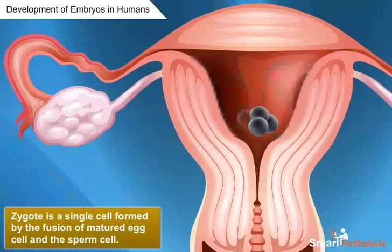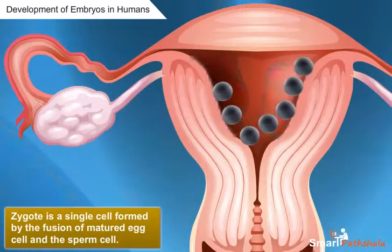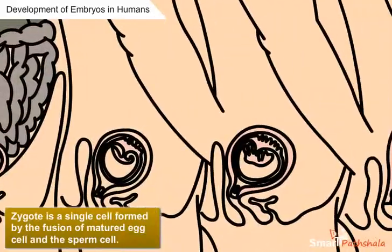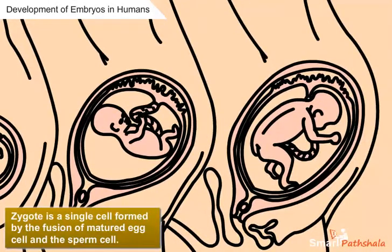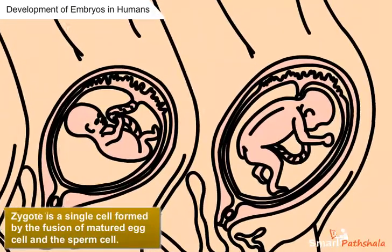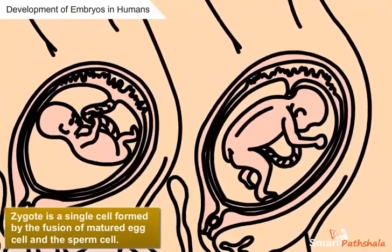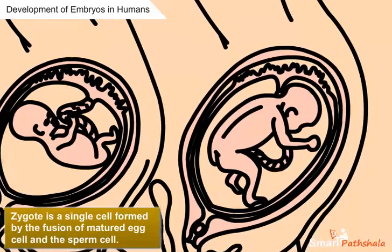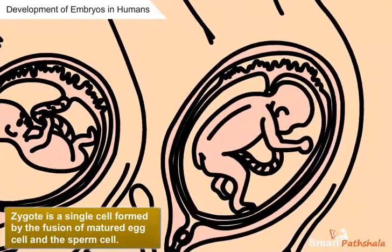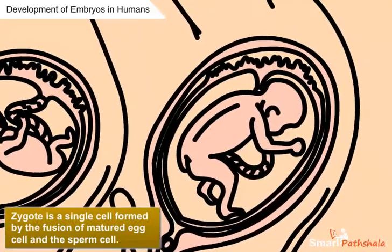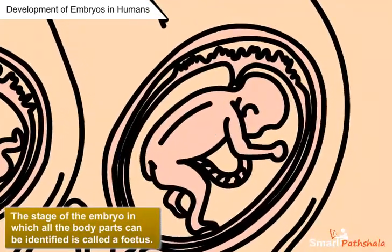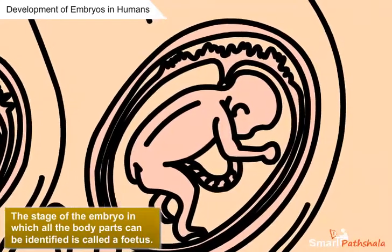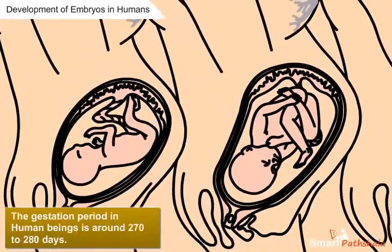This embryo gets implanted in the walls of the uterus where further development takes place. The embryo will gradually develop all the body parts like heart, kidneys, lungs, ears, eyes, hands, and legs, and this results in the formation of a fetus. The stage of the embryo in which all the body parts can be identified is called a fetus.